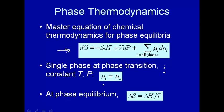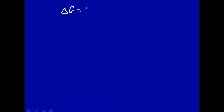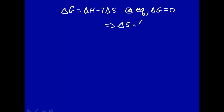This means that the chemical potential of that pure substance in phase one is equal to the chemical potential in phase two when you have phase equilibrium at constant temperature and pressure. Also note that at phase equilibrium, delta G is delta H minus T delta S. So at equilibrium, delta G is equal to zero, and this equilibrium we're looking at is phase equilibrium. This implies that delta S is just equal to delta H over T.